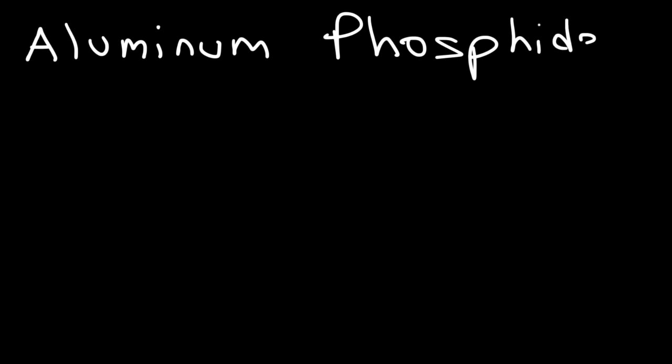Now let's try another similar problem: aluminum phosphide. What is the charge on the aluminum cation? Aluminum is found in group 13 or group 3A, so it has a 3 plus charge. And the element phosphorus has a negative 3 charge as an anion.